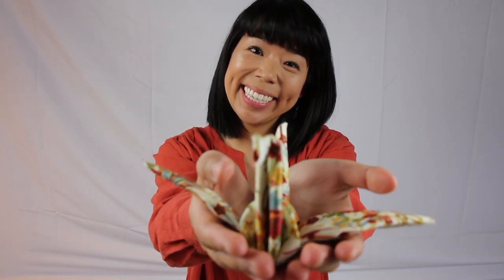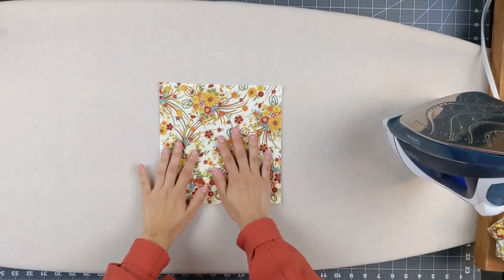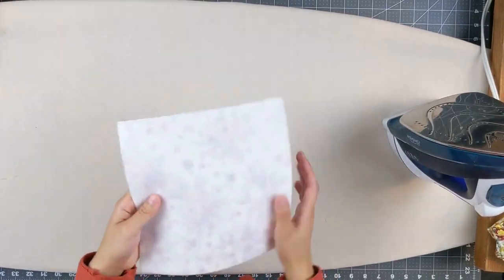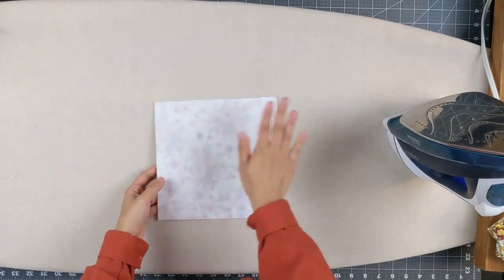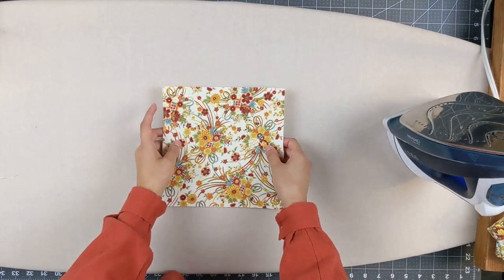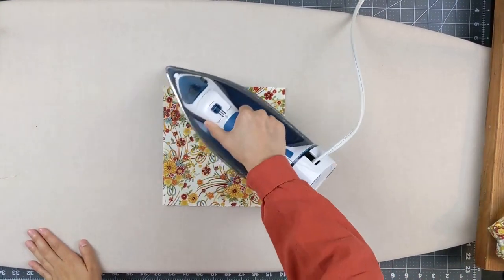Hi everyone, welcome back to another Dutch Label Shop crafting video. Today I'll be teaching you how to make a fabric origami crane. So first you're gonna start with your square piece of fabric with the interface on the back, it's already ironed on. Let's just do a nice press of the fabric.